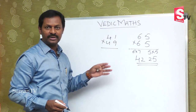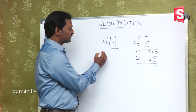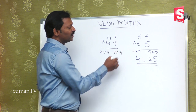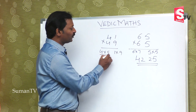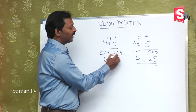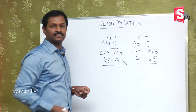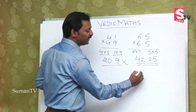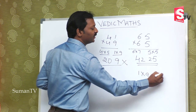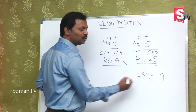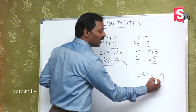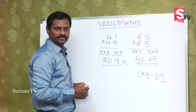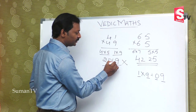For 41 multiplied by 49: 4 into the next number 5 is 20, and 1 and 9 is given, so 1 into 9 is 9. But wait — because there are 2 digits in the question, the answer for the units part must also have 2 digits. So 1 into 9 equals 09, not just 9. This is the right answer.